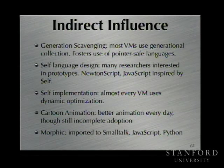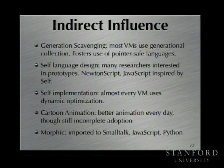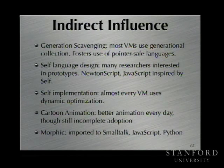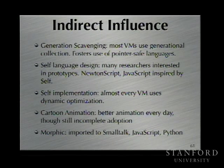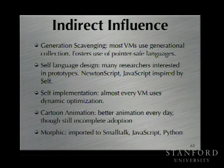More influences of this work: Generation Scavenging spawned a lot of descendants, and almost every virtual machine you use has some variation on it. Pointer-safe languages would never have become practical without this work. In language design, the prototype stuff languished for years — NewtonScript adopted it, and then Brendan Eich was inspired by it when he did JavaScript. In the implementation, just about every virtual machine now uses the dynamic optimization tricks. The cartoon animation techniques you see on your screens every day. And Morphic, the UI that Randy did with John Maloney and others, was ported to other systems as well.